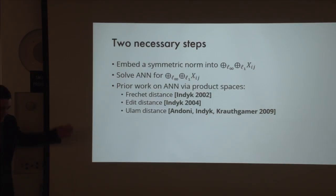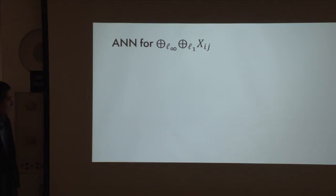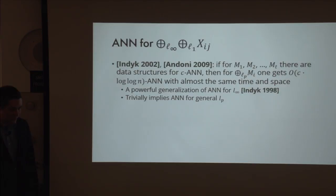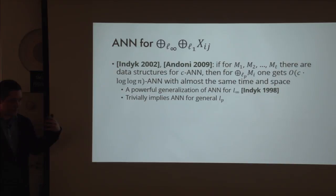Let's start with the second step: how to solve approximate nearest neighbor search for this space. We have a powerful tool: if you have a direct sum of several spaces and you can solve ANN for all of them, you can solve ANN for the direct sum without much loss. If the initial approximation was C, the new approximation is C times log log N, where N is the number of points. Importantly, the approximation doesn't depend on the number of terms T.